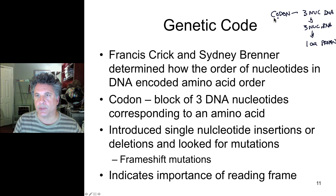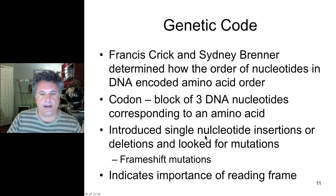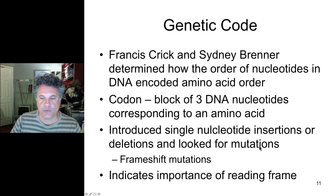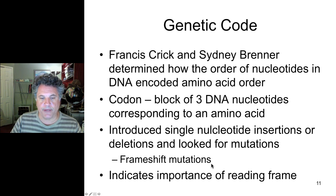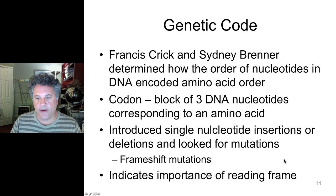Three nucleotides defining a codon specifies one amino acid in a protein. They discovered this triplet code by taking a genetic approach in a bacterial virus, introducing mutations consisting of single nucleotide insertions or deletions. They looked for mutations that disrupted protein synthesis in a particular way — producing frame shifts in the reading of the genetic code — and discovered the importance of the reading frame of messenger RNAs in the production of functional proteins.